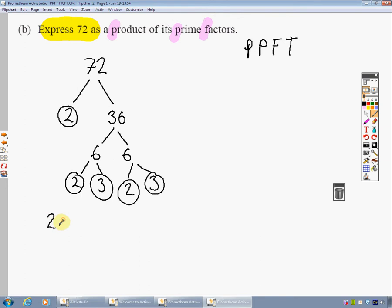So it's 2 times 2 times 2, just check that one, times 3, times 3. That will get you full marks. You could write it as 2 cubed times 3 squared if you wanted to.